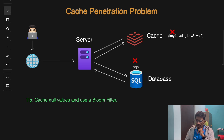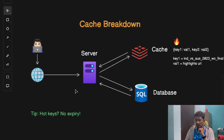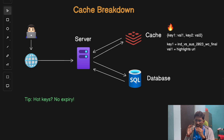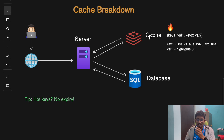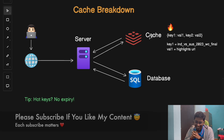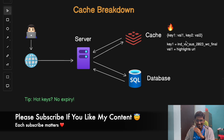The third problem is the Cache Breakdown problem, which is a sibling of the Thunder Herd problem but specific to hotkeys. Hotkeys are keys whose data is accessed a lot — like trending videos or popular products, for example India versus Australia 2023 World Cup final highlights. When a hotkey expires from the cache, it creates a specific, concentrated issue.